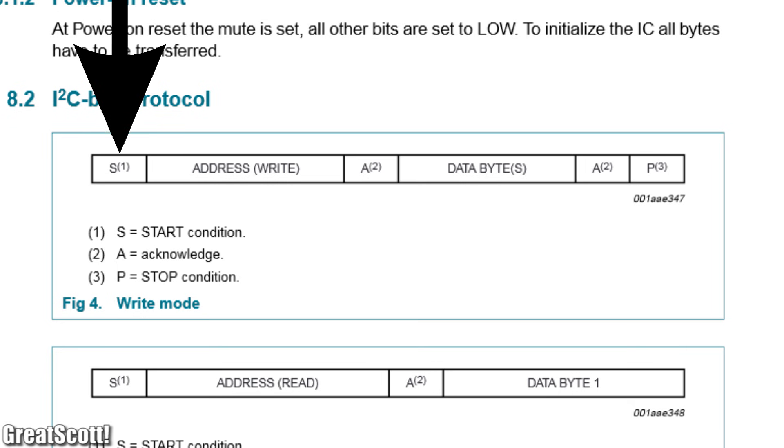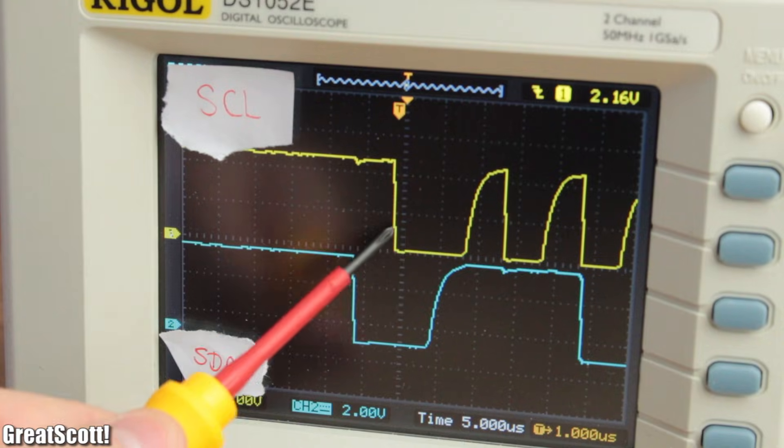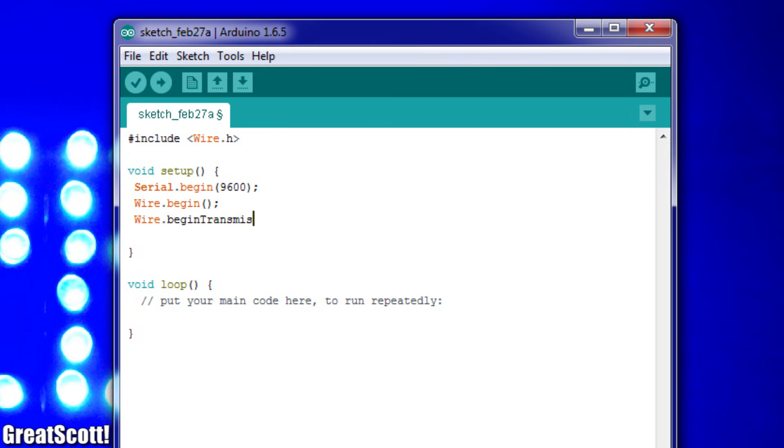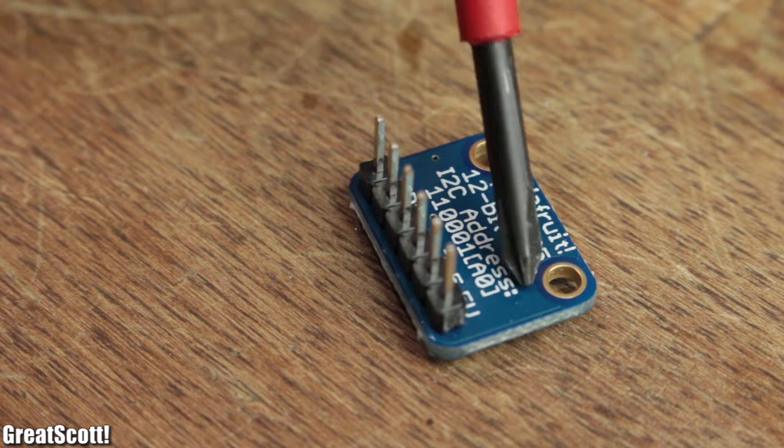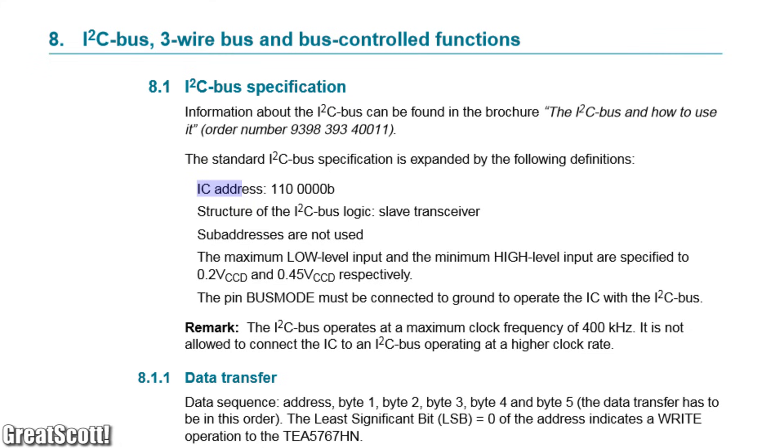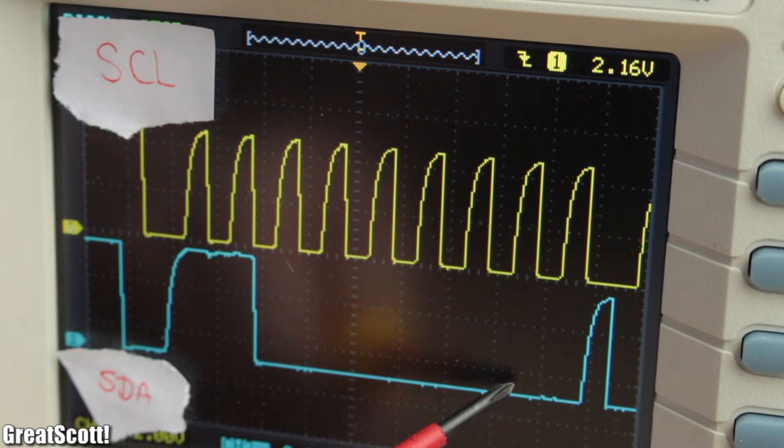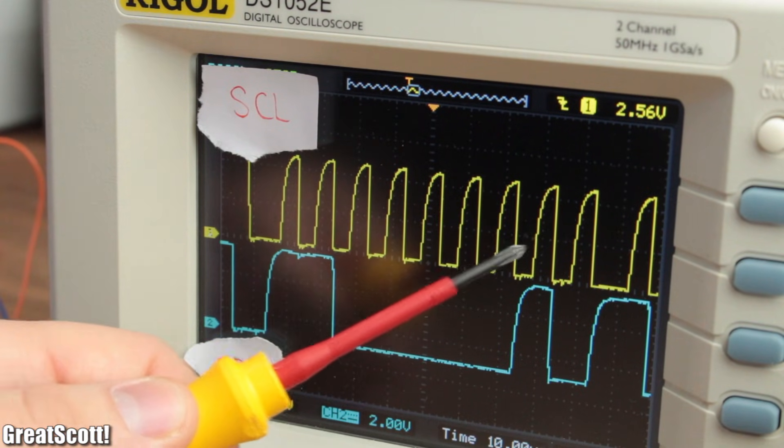Firstly we need to send a start condition, which means the serial data falls while the clock stays high. But don't worry, the wire library of the Arduino does this automatically when a transmission begins. Then we need to send the address, which is usually a fixed 7-bit value which is always mentioned in the datasheet. Afterwards follows the R/W bit, which is 0 if you want to write to the slave or 1 if you want to read from the slave.